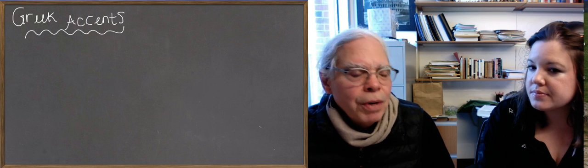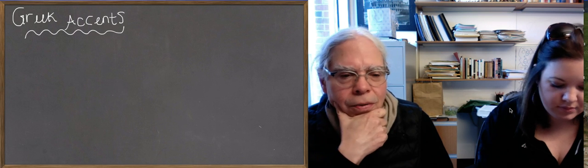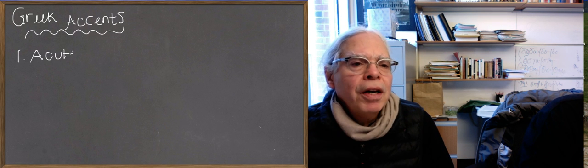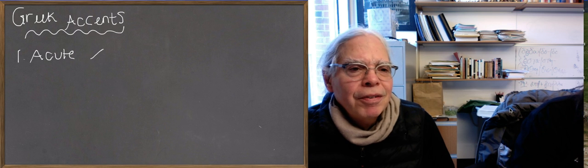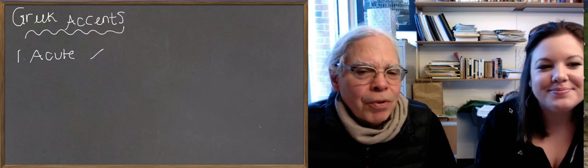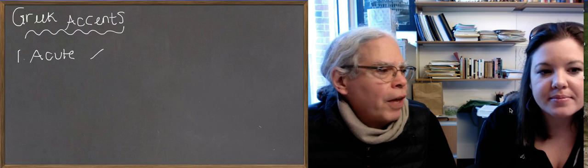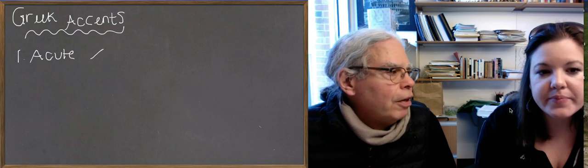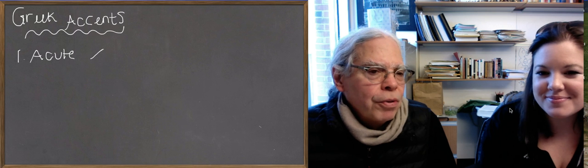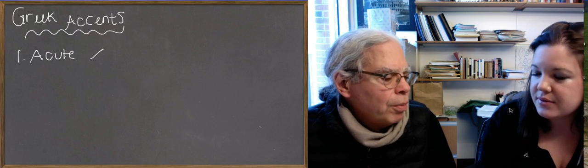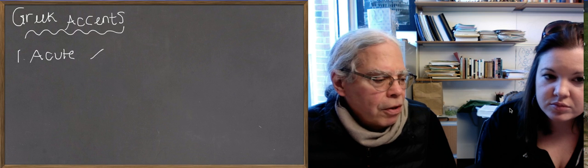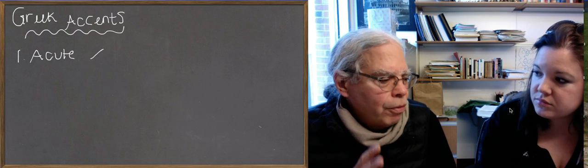Let's talk about the three accents that we have — names that are familiar to you. The first accent is an acute accent, and it looks just like any acute accent in a modern language — it goes up. What it actually designates is that the pitch rises on the syllable that has an acute accent over it. An acute accent can go on any of the three last syllables of a word.